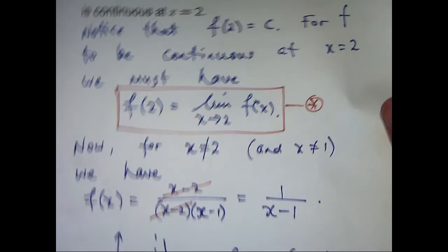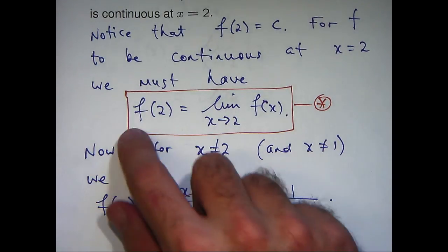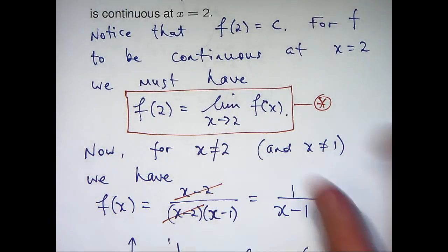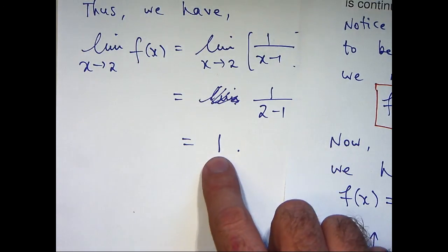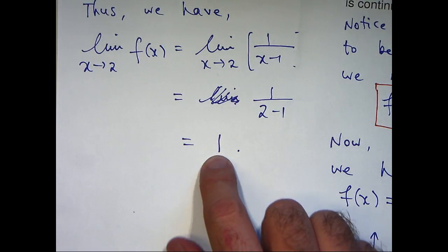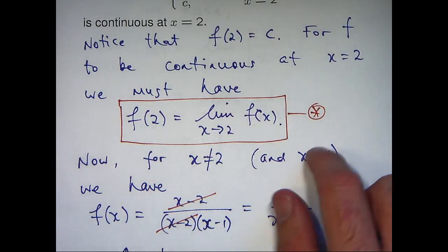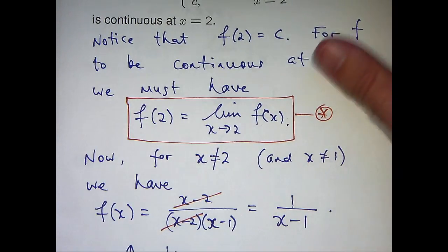Now, in order for star to hold, I would just define f of 2 to be this value here, 1. That will guarantee me that star holds and f will be continuous at x equals 2.